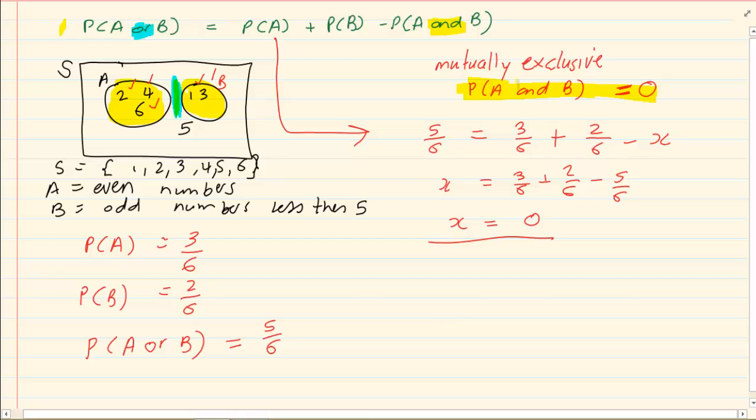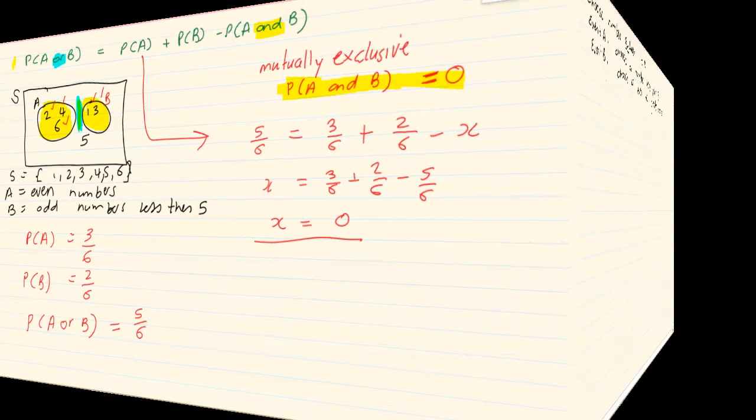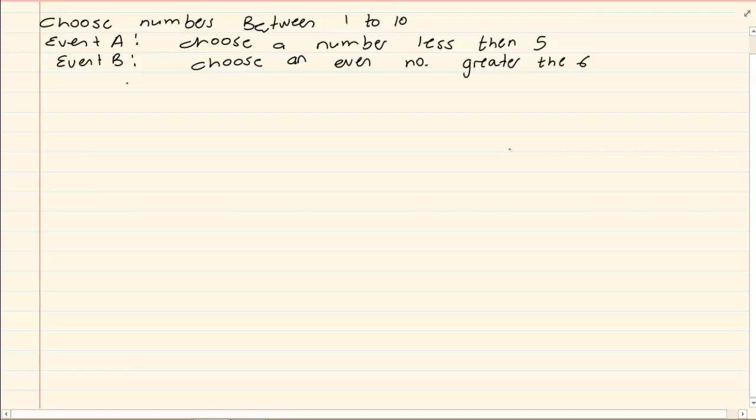So if I give you the following equation, it says choose a number between 1 and 10. That is what we get to choose from. Event A says choose a number less than 5.